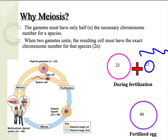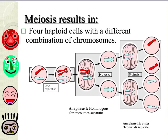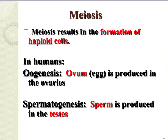So why is meiosis so important? Well, the gametes must have only half the necessary chromosomes. When the two gametes unite, the resulting cell must have the exact chromosome number for that species. Unlike mitosis, meiosis will always result in four haploid cells with a different combination of chromosomes every time. This contributes to genetic variation and is an advantage of sexual reproduction. In humans, meiosis is called oogenesis in females, where an ovum is produced in the ovaries, and spermatogenesis in males, where sperm is produced in the testes.